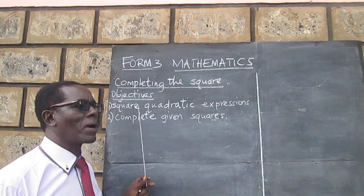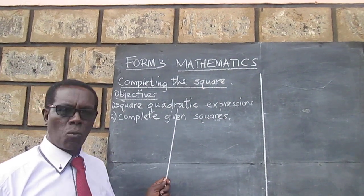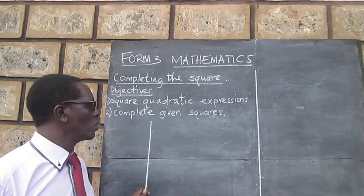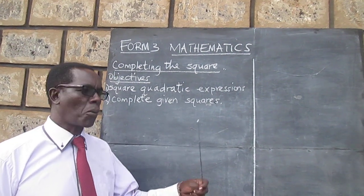The objectives for our lesson are: one, to square quadratic expressions, and two, to complete given incomplete squares.